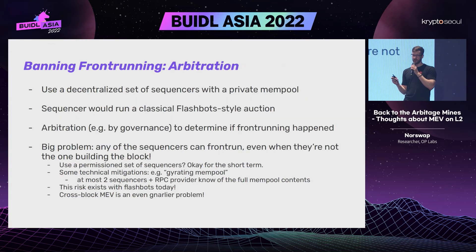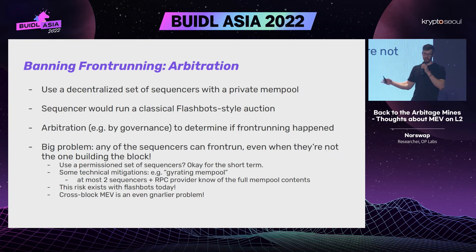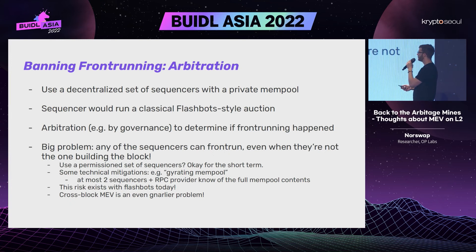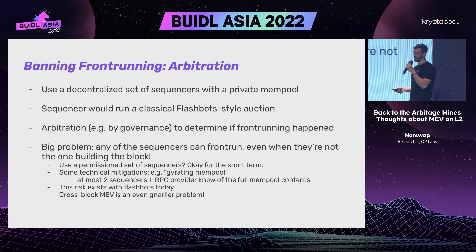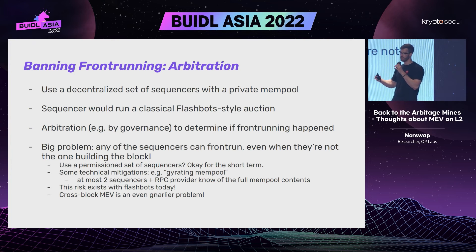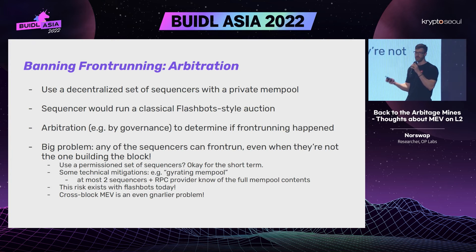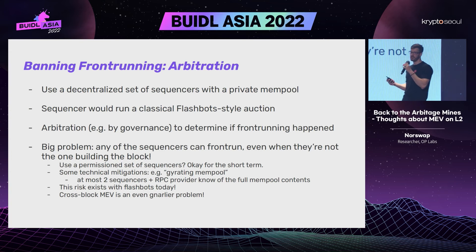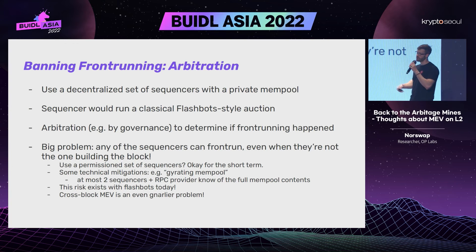The alternative is arbitration: some party, likely governance via token or another structure, decides whether rules have been violated. The big problem is that all transactions are public, so any sequencer can front-run, and you can't easily prove who did it. Flashbots has a similar social contract against this, which has worked in practice but is a pretty weak guarantee — a skilled actor could front-run without detection. This is a good short-term solution but probably not what we want for the long term.